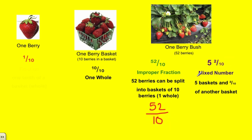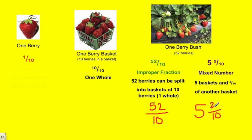So in order to get a mixed number from that, we're just going to use division — we're going to think about how many wholes would fit into the 52 berries we have in the bush. So how many tens fit into 52? That would be 5 tens. And when we do 5 times 10, we get 50, which means there's going to be 2 berries left. So our mixed number is 5 baskets of berries with 2 left out of 10, meaning we have 2 berries left, and if we could get 8 more, we would make another whole. But we only have 2 out of 10 in order to make a whole.